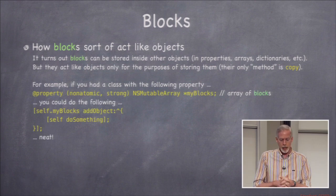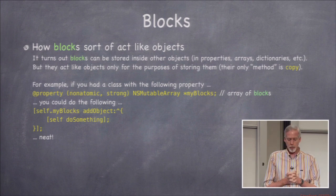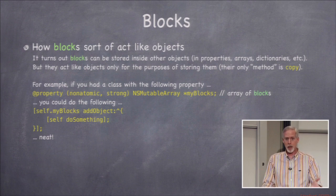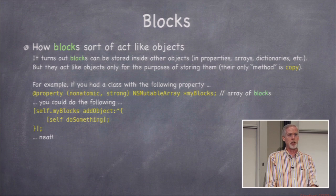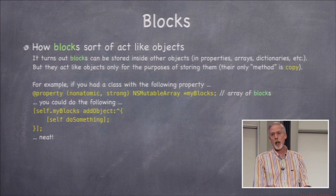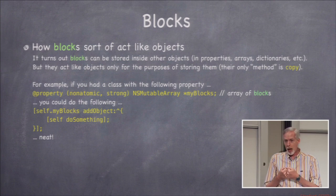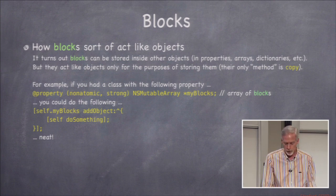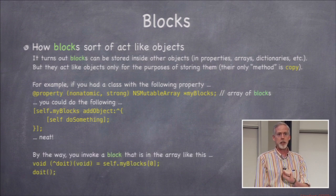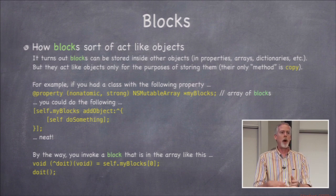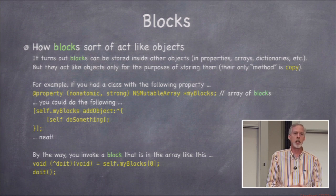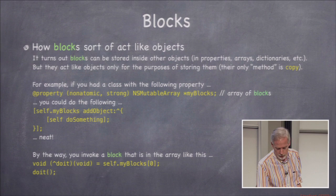You can put a block into a mutable array by calling addObject with the block. This looks weird since blocks aren't objects, but they act like objects for storage purposes. You can also invoke a stored block — the syntax is like C function syntax — but in this class you'll mostly be passing blocks to iOS APIs that execute them. I won't cover invoking blocks directly today due to time, but you can look it up in the Xcode documentation.